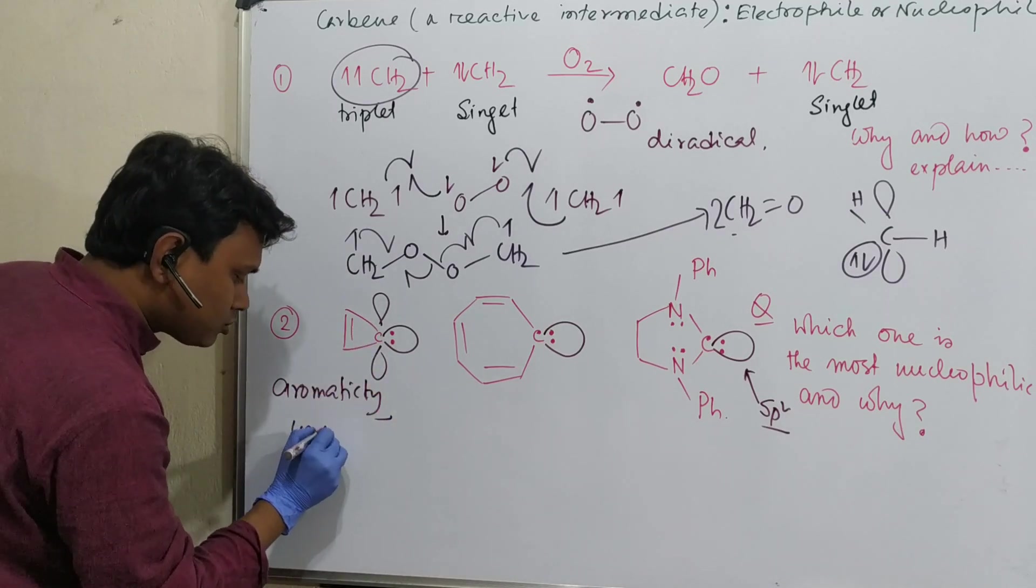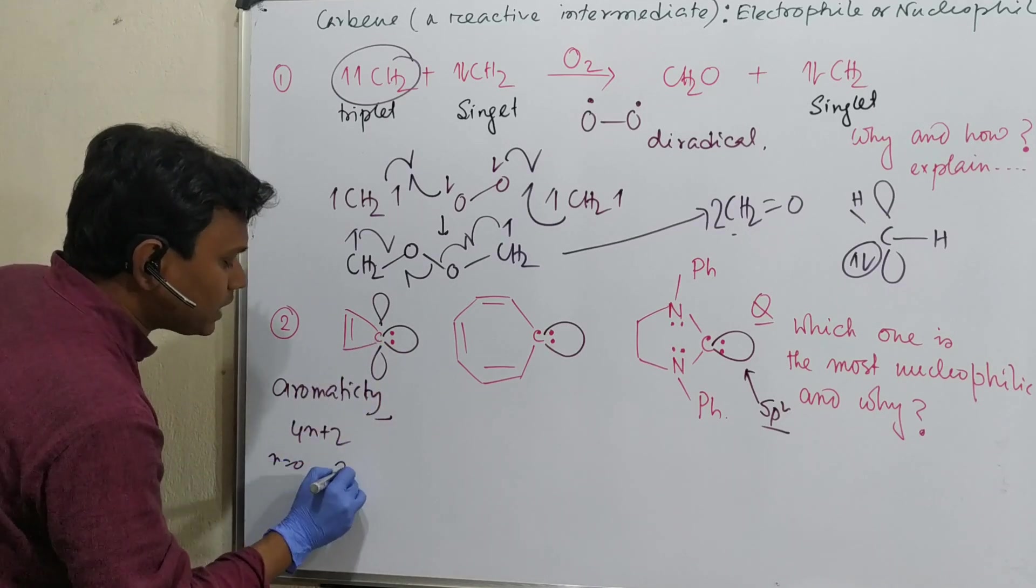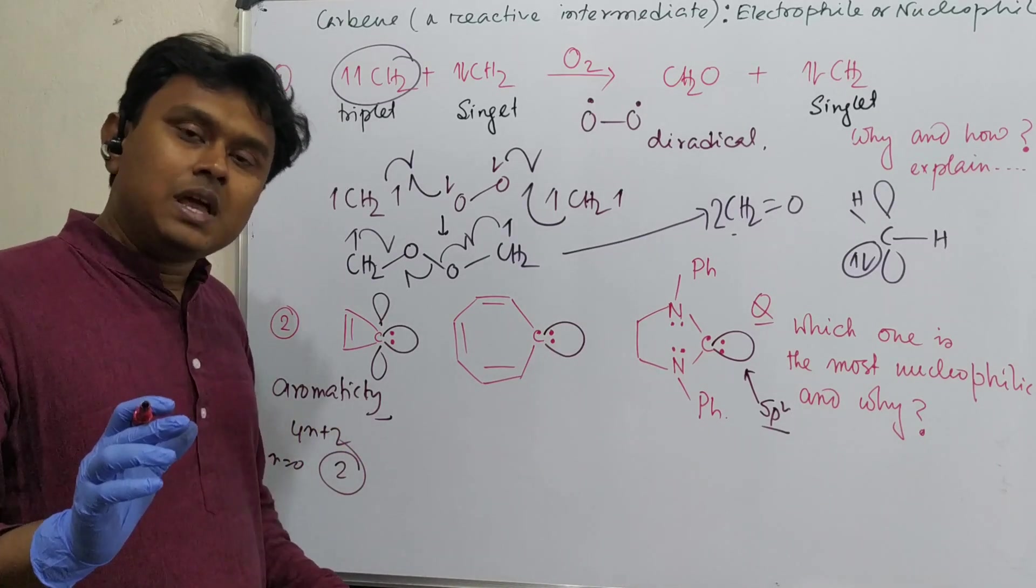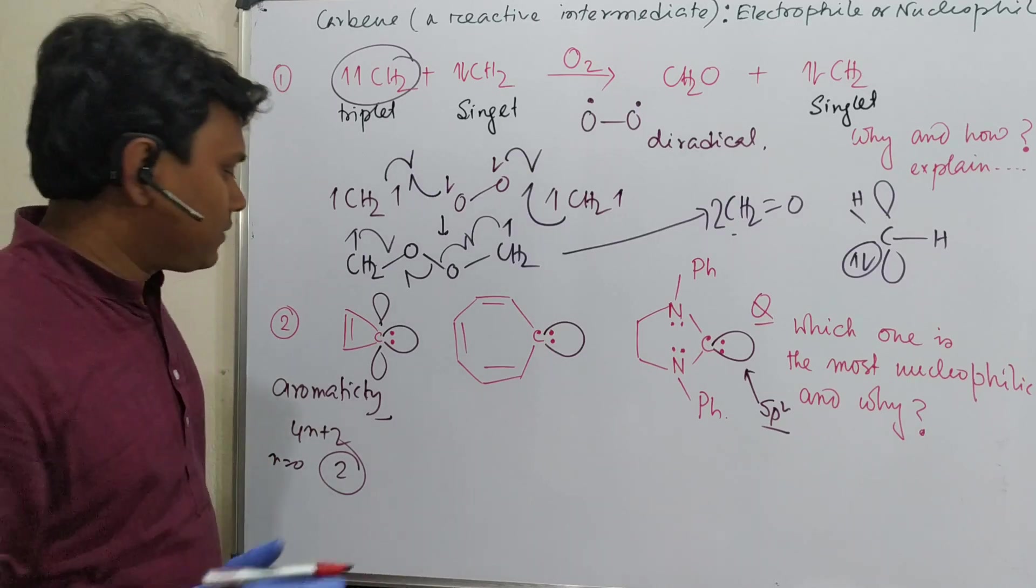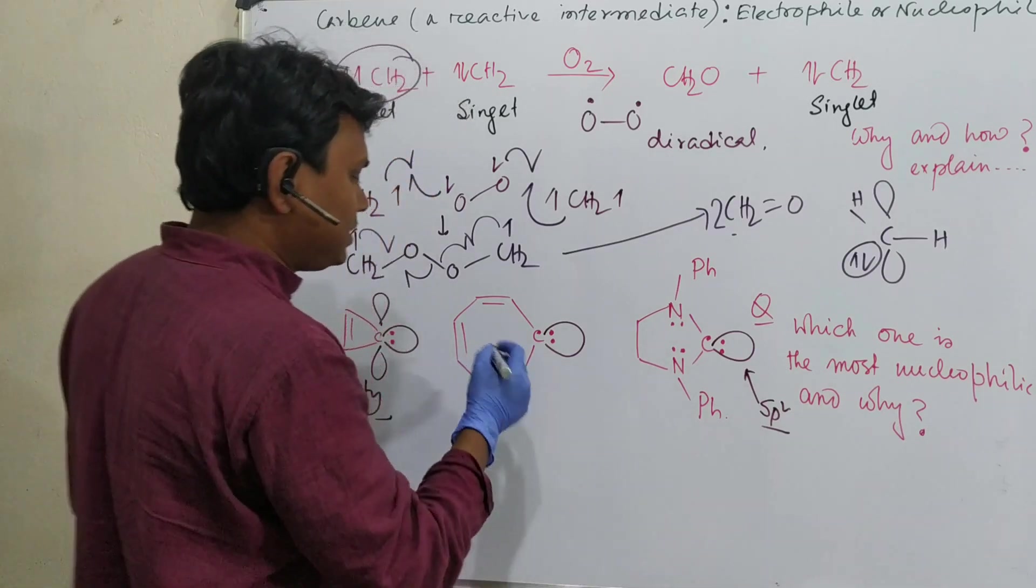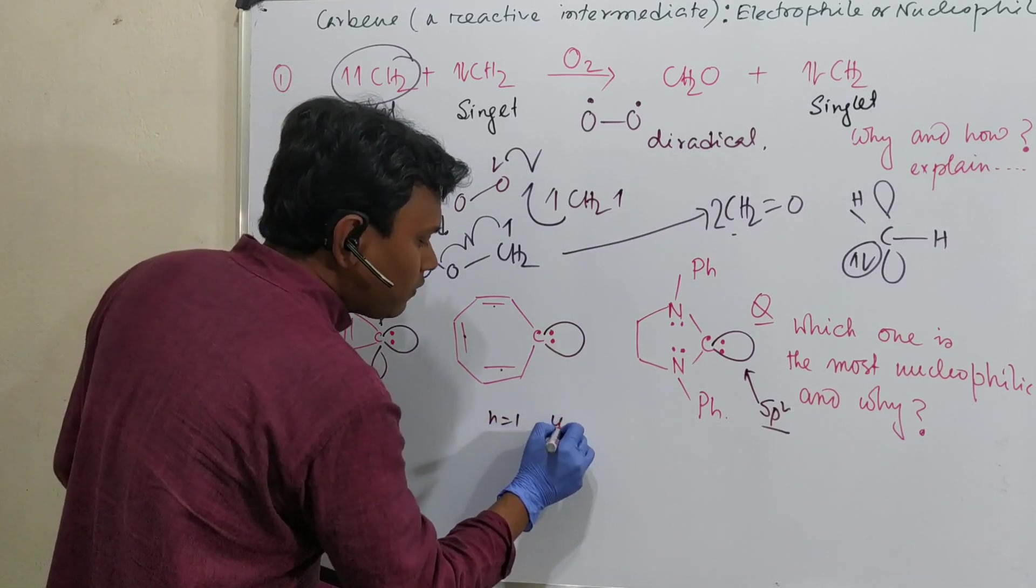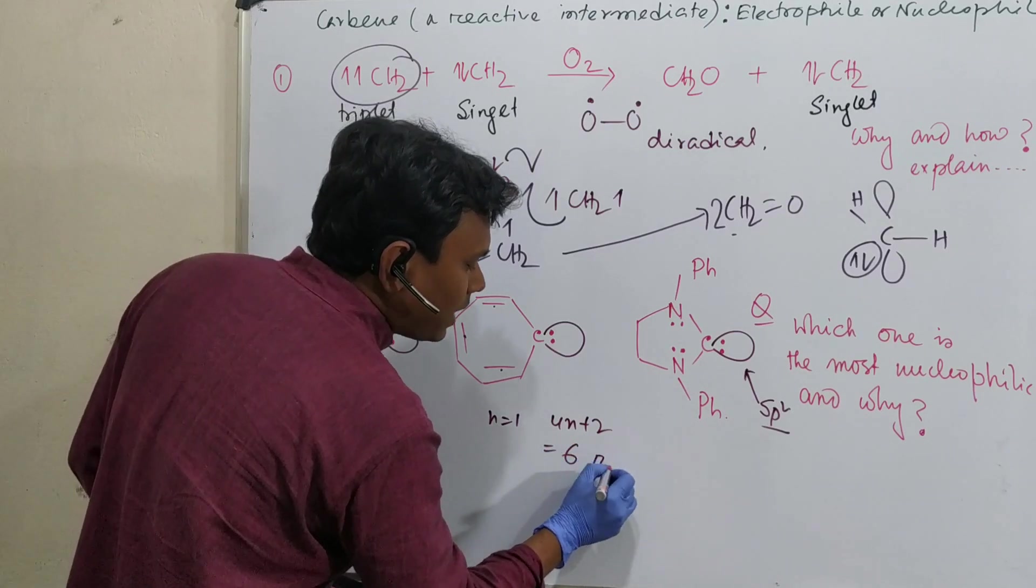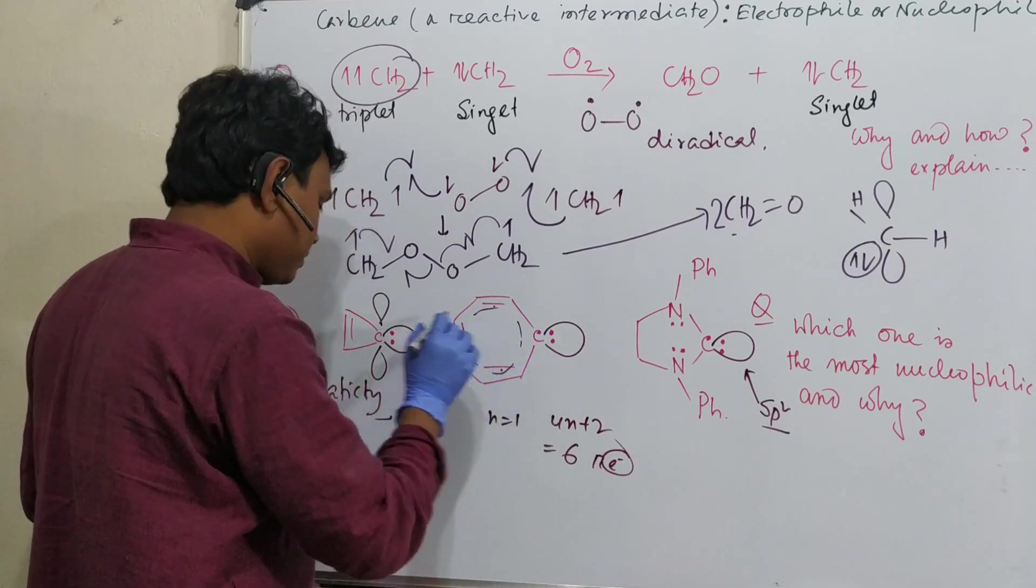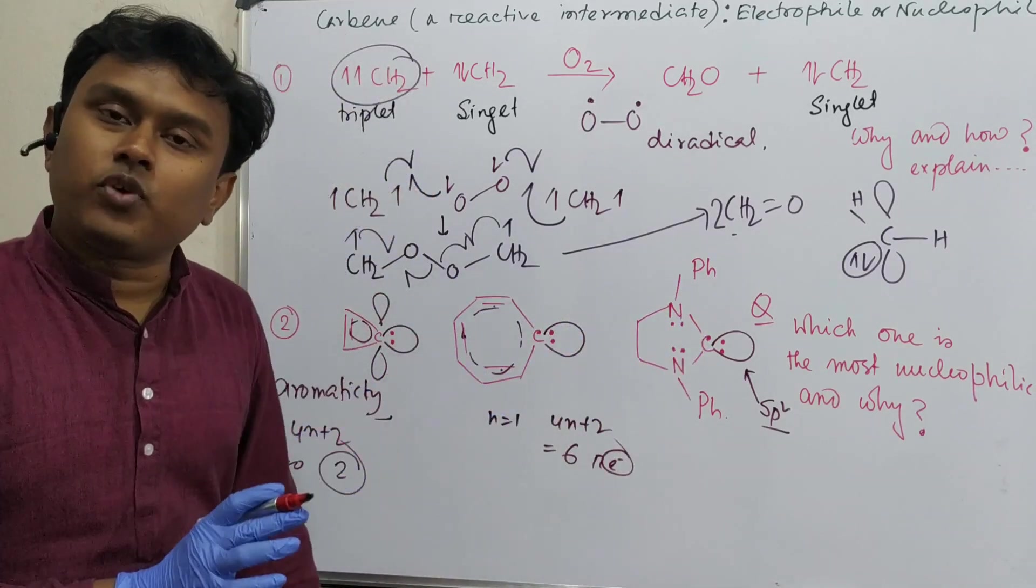Because 4N plus 2. If you consider here, N equals 0, so 2 electrons like cyclopropenium cation. Please, I have already uploaded a video about cyclopropenium cation and its aromaticity, please visit if you haven't. If you see this, it is like propylium cation. So 2, 2, 6 electrons means 4N plus 2, N equals 1, then 4N plus 2 equals 6 pi electrons. It's conjugated, so resonance is possible for both.